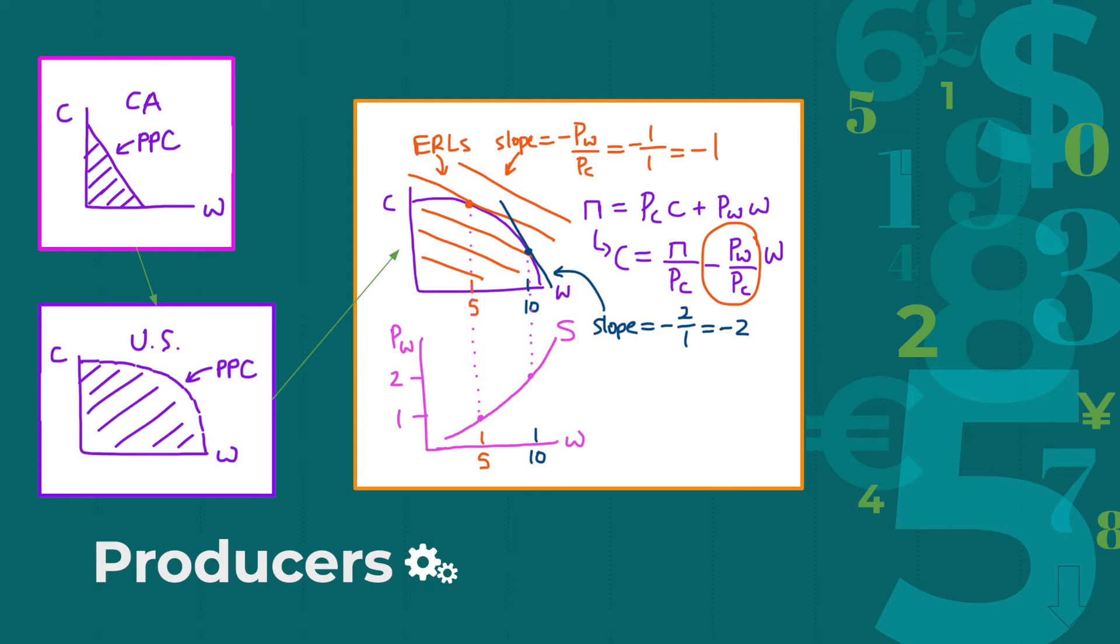We can then rearrange this equation into y equals mx plus b form, where the amount of corn produced equals profit over the price of corn minus the ratio of the price of wheat and price of corn times the amount of wheat produced. So the slope of this line would be negative the price of wheat over the price of corn, and from this slope, we can draw several lines that are called equal revenue lines, or ERLs.